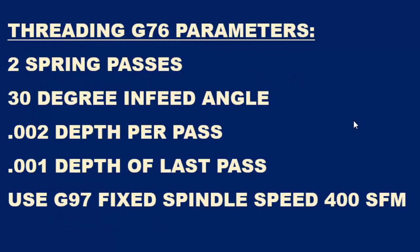Last but not least, here are some parameters to use in your G76 threading canned cycle. I'd like to see you do two spring passes at full depth and use a 30 degree infeed angle. We're going to use two thousandths depth per pass and one thousandths depth of cut on the last pass. Go ahead and use a G97 fixed spindle speed of 400 RPM.